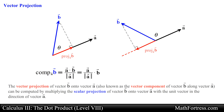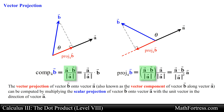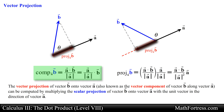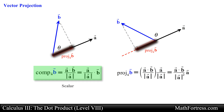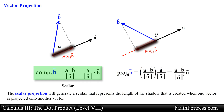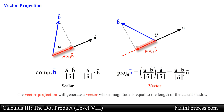The vector projection of vector b onto vector a — also known as the vector component of vector b along vector a — is computed by multiplying the scalar projection of vector b onto vector a by the unit vector in the direction of vector a. The vector projection generates a vector that points in the direction of vector a, with length equal to the scalar projection. So keep this in mind: the scalar projection generates a scalar representing the length of the shadow, while the vector projection generates a vector whose magnitude equals that shadow length.